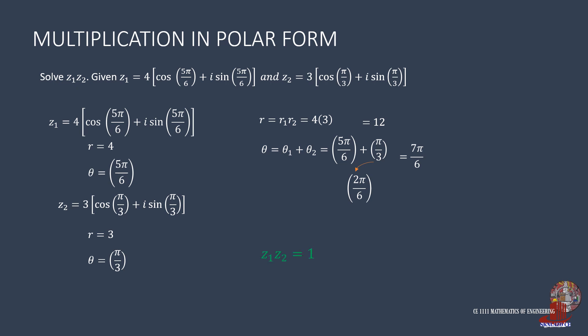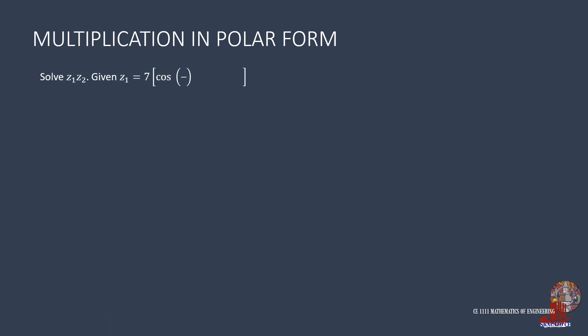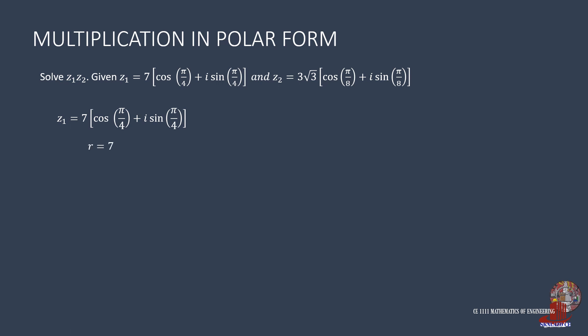Therefore, the resulting complex number is 12 CIS 7 pi over 6. For the next example, z1 is 7 times cosine of pi over 4 plus i sine of pi over 4, and z2 is 3 root of 3 times cosine of pi over 8 plus i sine of pi over 8. From the first complex number, the absolute value r is 7 and the argument is pi over 4. From the second, r is 3 root of 3 and theta is pi over 8.